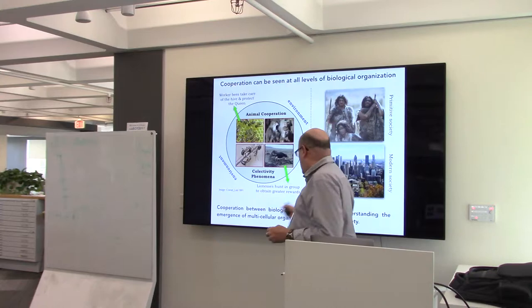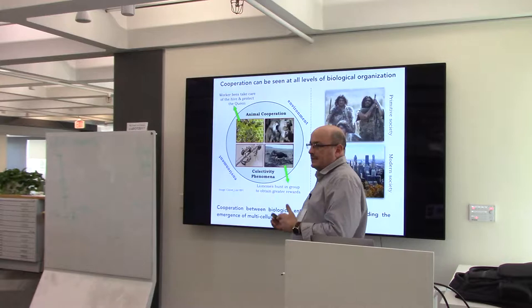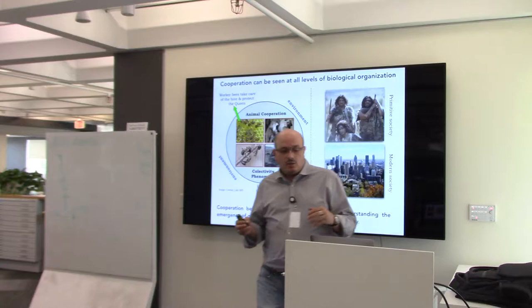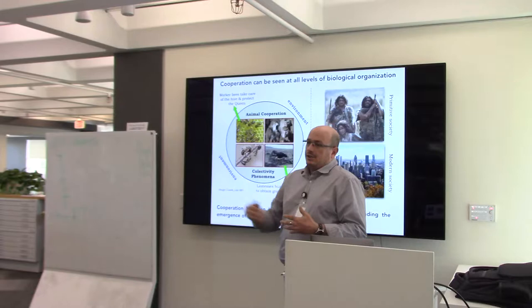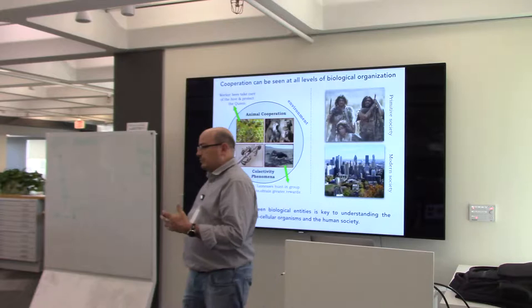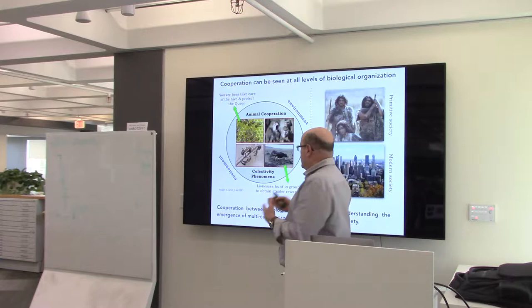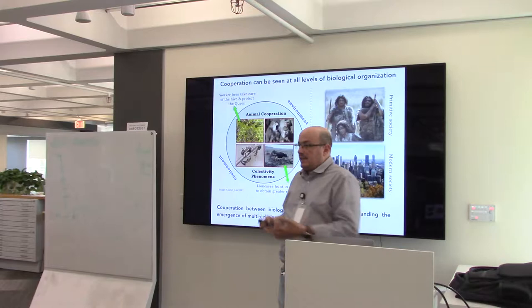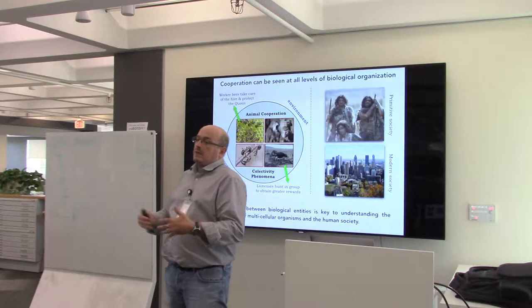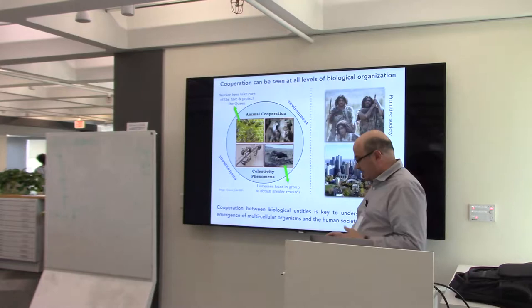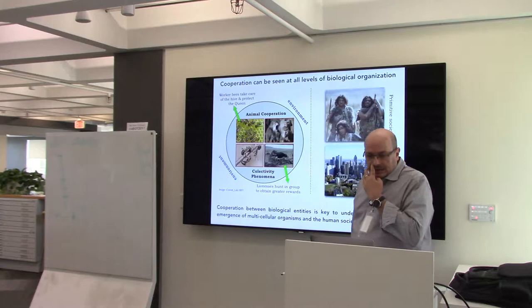This is an evolutionary puzzle. Darwin himself, when he wrote the Origin of Species, recognized that his theory could not explain the origin, emergence, and sustainable cooperation among different species. His theory could not account for species that sacrifice at cost to help others — like humans helping somebody not related to them. There is no kin relationship, so it cannot be explained by selective advantage or natural selection. Non-kin cooperation has remained an evolutionary puzzle for more than 150 years.